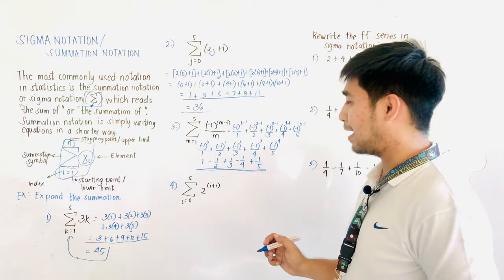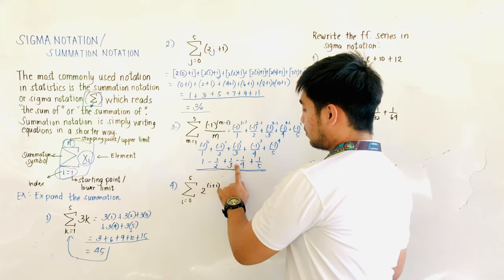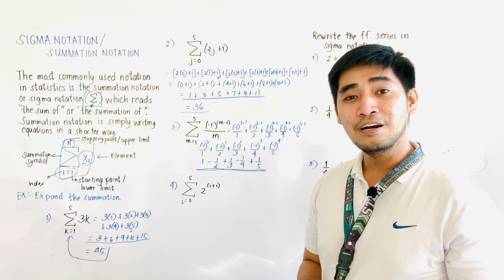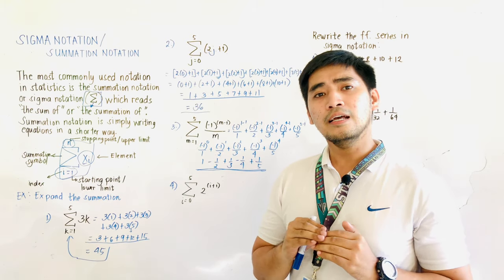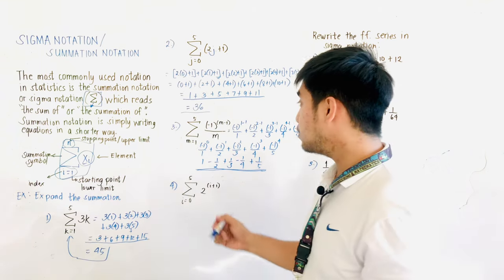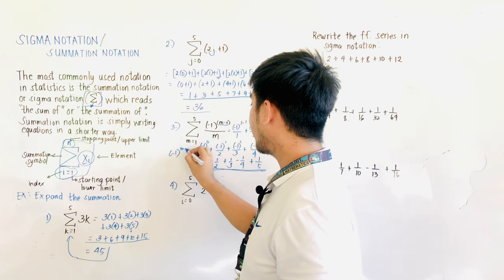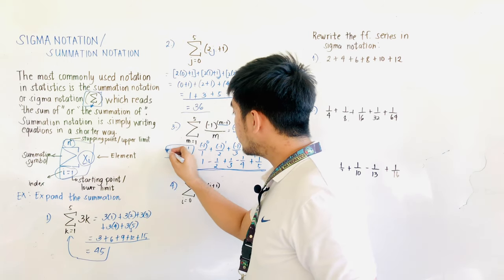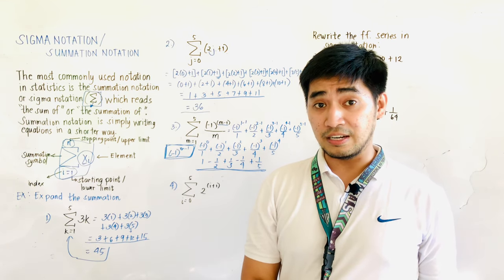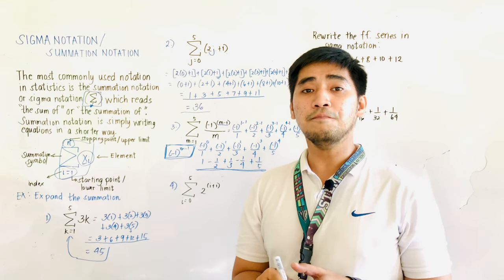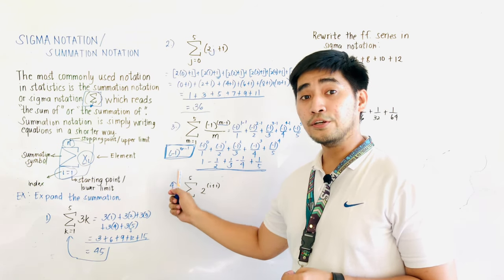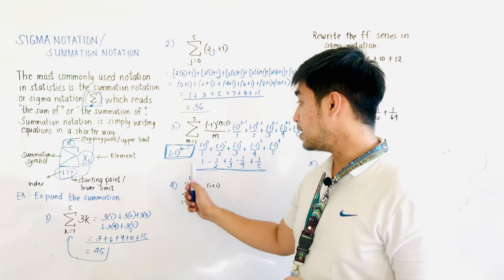What can we say about this expanded form? The signs are alternating. Always remember: if a series contains alternating signs, we use the formula (−1)^(m−1) to denote the signs. We will use this formula later in our activity if the signs of the terms in a given series are alternating.